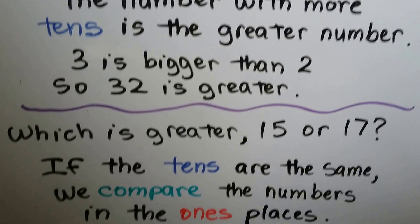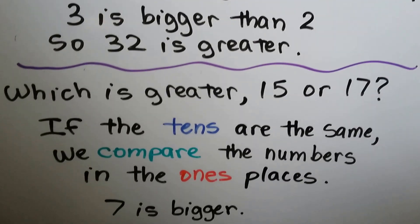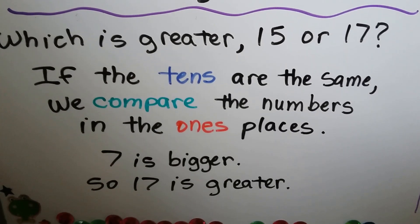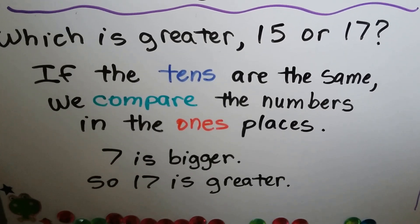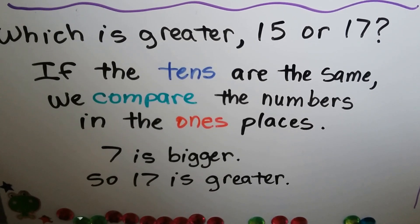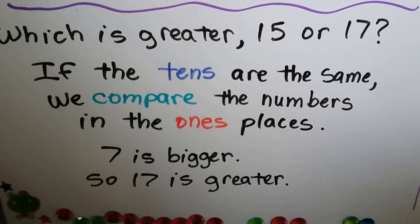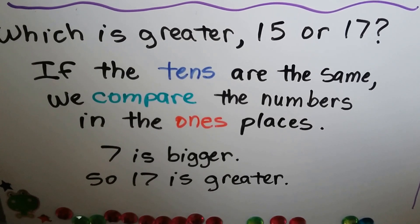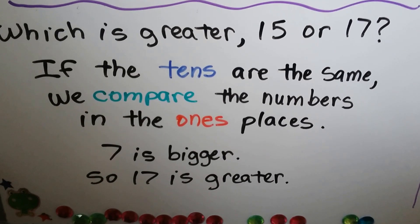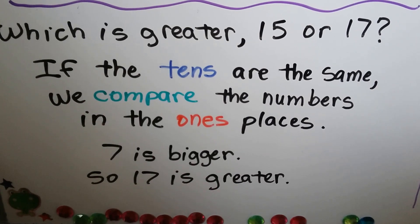Which is greater, 15 or 17? If the tens are the same, we compare the numbers in the ones place. They both have a 1 in the tens place. The 7 is bigger than the 5, so 17 is greater than 15.